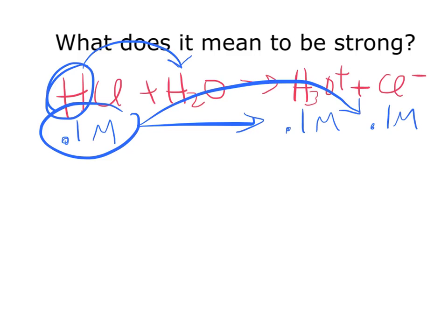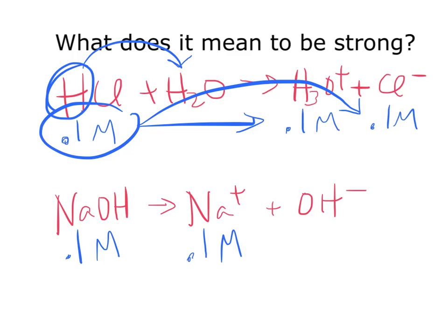Same thing if you have a strong base. Let's say you have NaOH, so that's going to dissolve in water to make Na+ and OH-. So let's say you had a concentration of 0.1 molar NaOH. That means you'd have 0.1 molar Na and 0.1 molar OH, because all of this turns into the Na and the OH-.